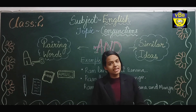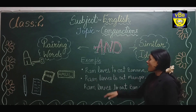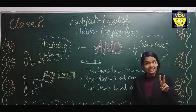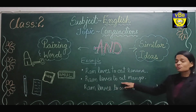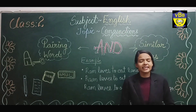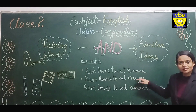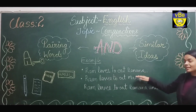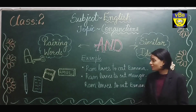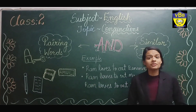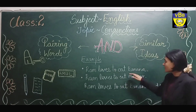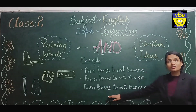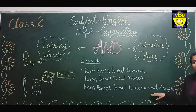The word 'similar' means same. For example, our first sentence is 'Ram loves to eat banana' and our second sentence is 'Ram loves to eat mango.' Do you find any similarities between these two sentences? Yes — banana and mango, both fruits are loved by Ram. So, because we find similarity in these two sentences, we can rewrite them as: 'Ram loves to eat banana and mango.'